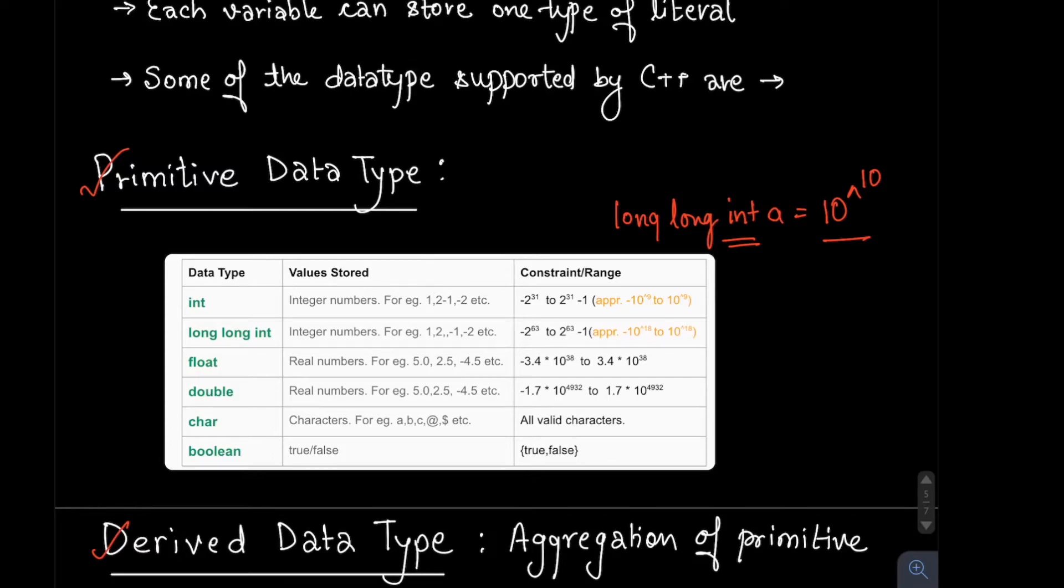Similarly, we have something like boolean, which shows true and false. In the literal section, we saw that C++ supports true and false values as keywords. So we can write something like boolean flag equals true.